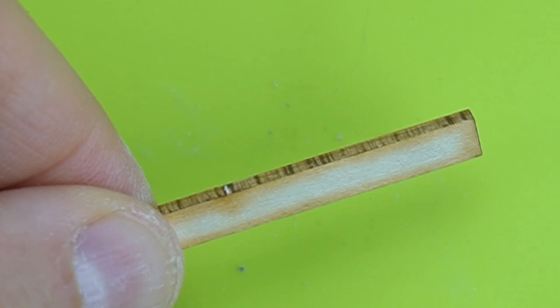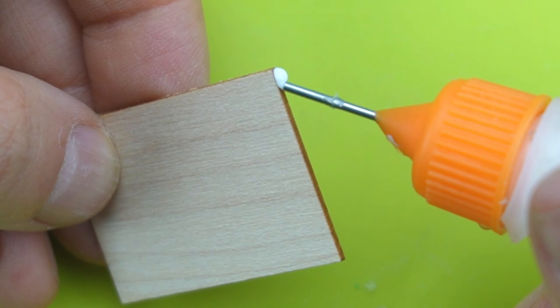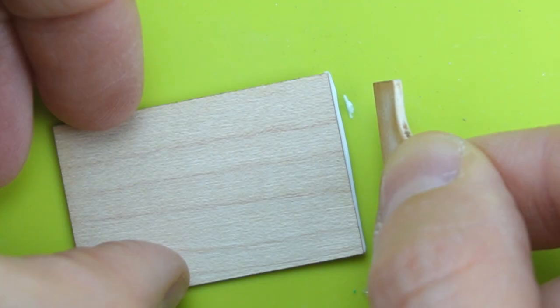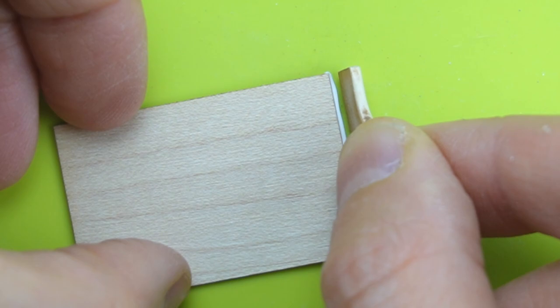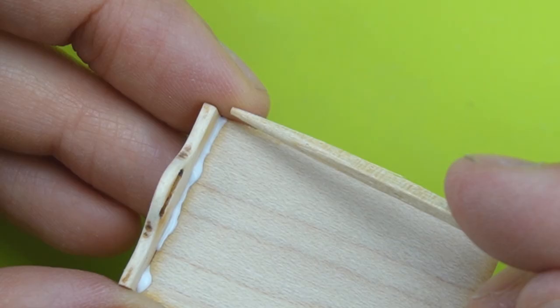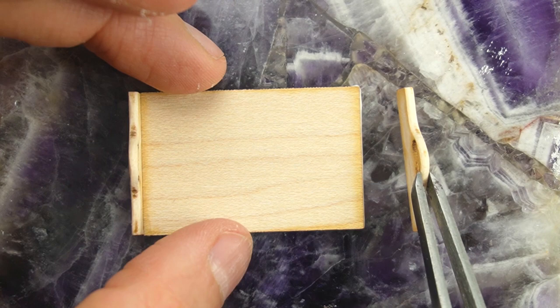I sanded the top edges of the two side pieces as well. Once the pieces were sanded I moved on to assembly. I glued the ends on first, removing excess glue as I went and then added the side pieces last.